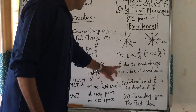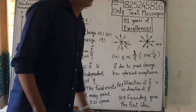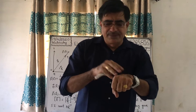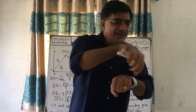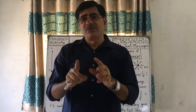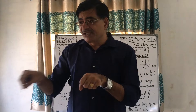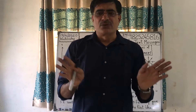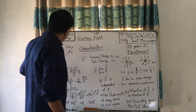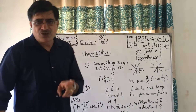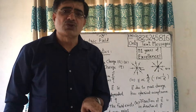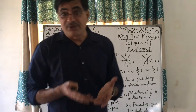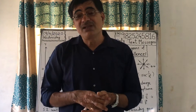Vector E due to a point charge has spherical symmetry — meaning at one centimeter distance in any direction from the source charge, the electric field will have equal magnitude. This is called spherical symmetry. The direction of E is the direction of force on unit positive charge. Finally, Faraday was the first to give the idea about the electric field.